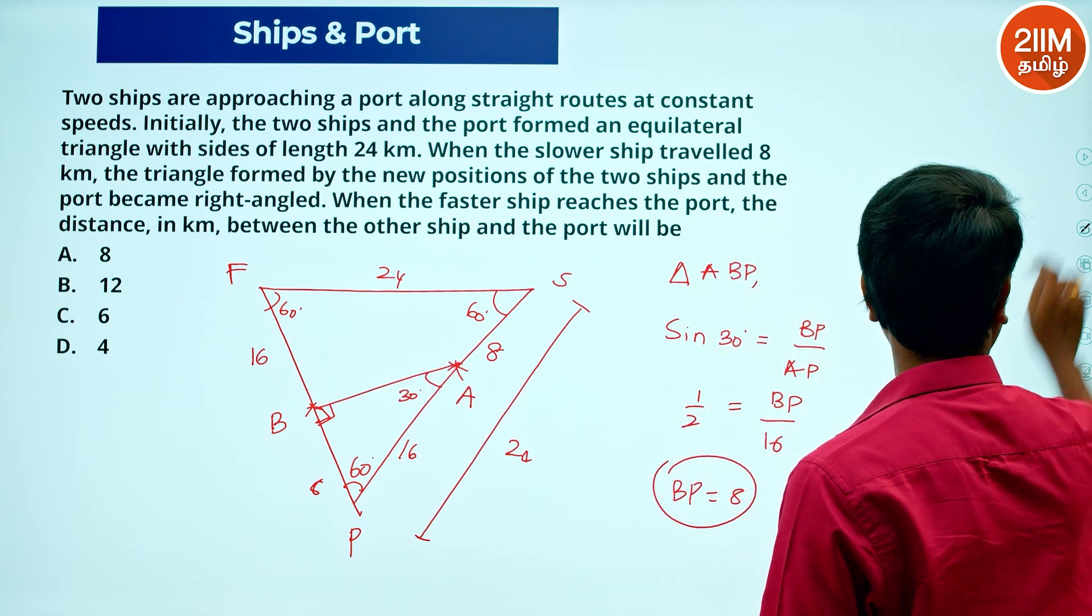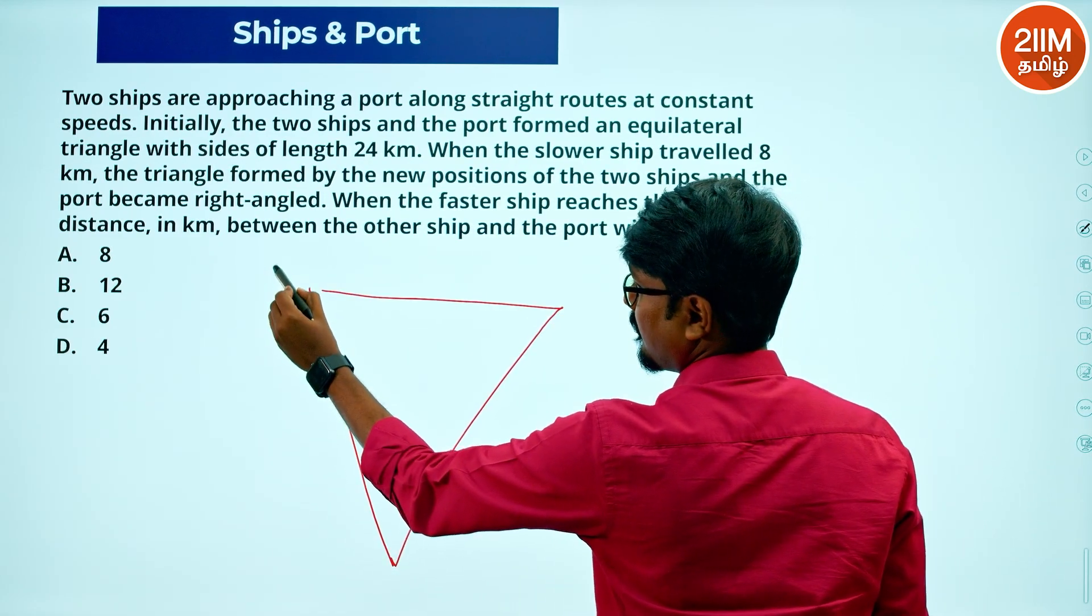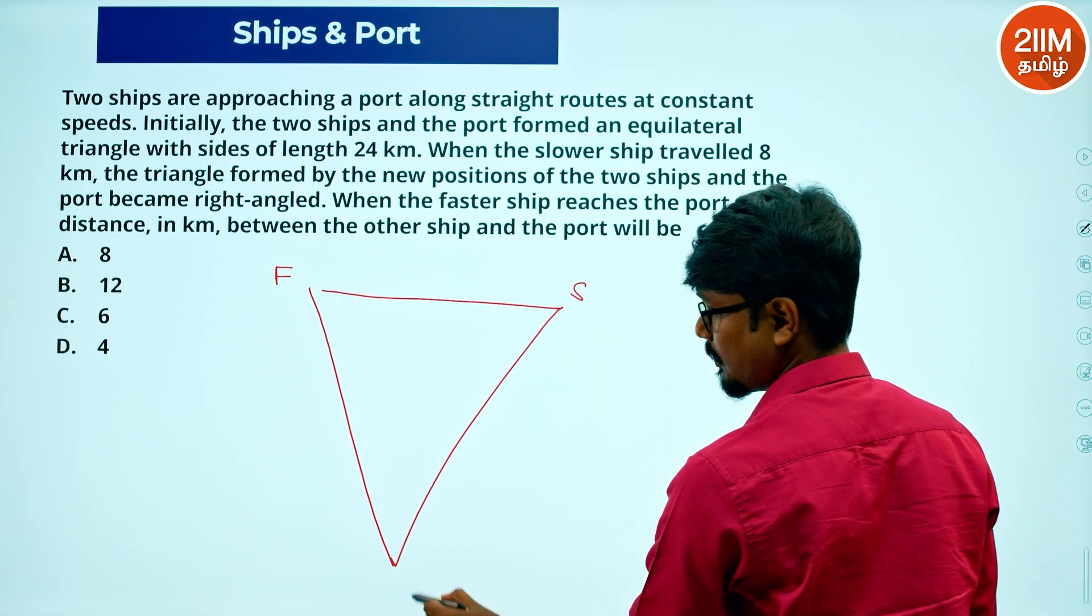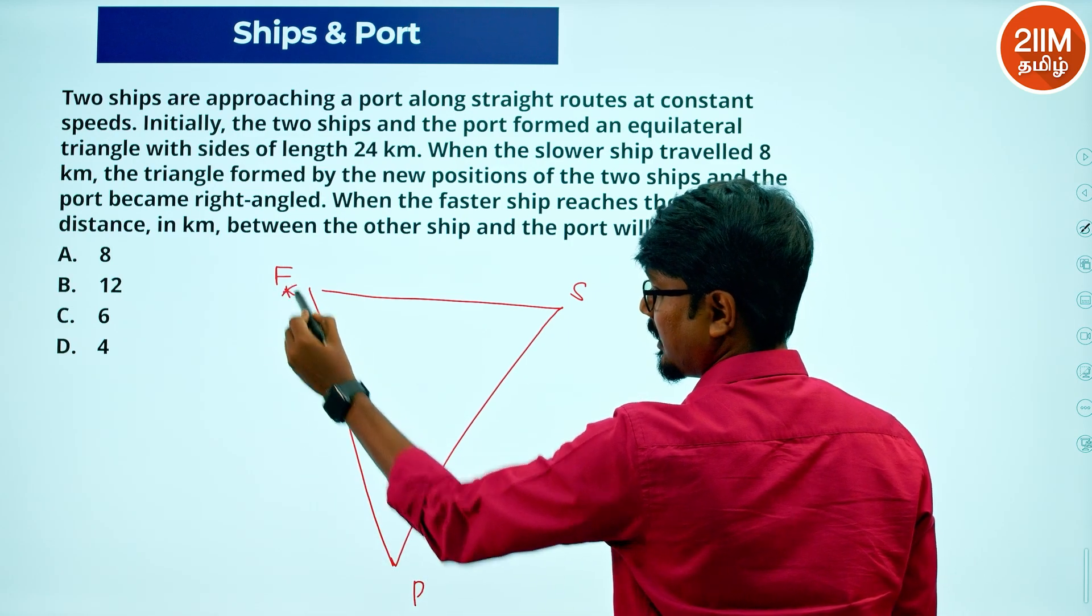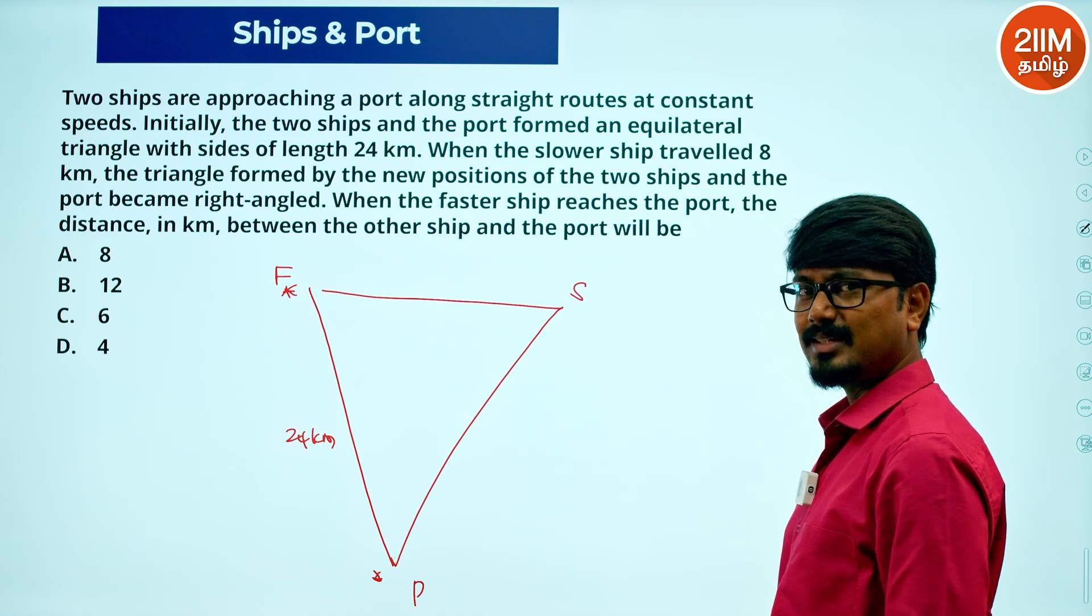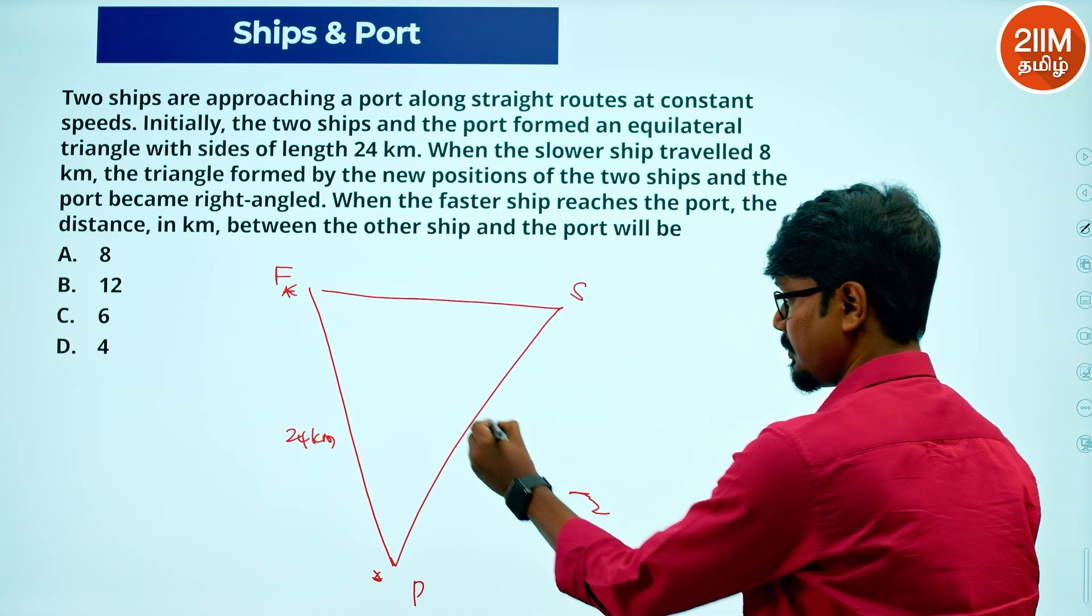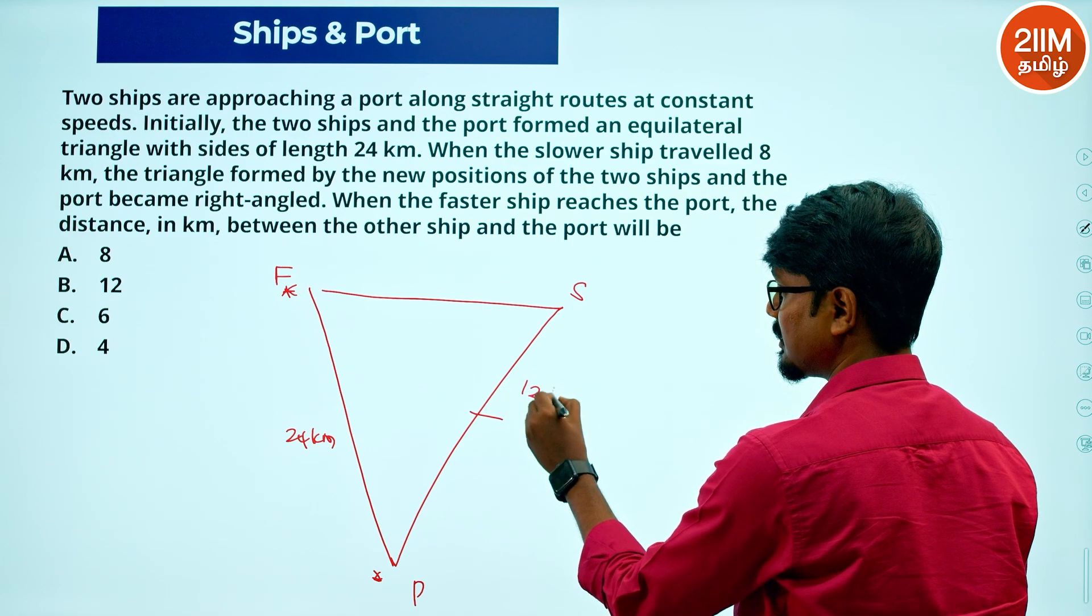Logically, in the triangle shape, faster ship, slower ship, port—if the faster ship travels 24 km, the slower ship will be exactly half, which means half, 12 km it will have traveled.